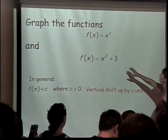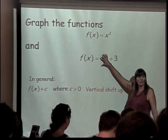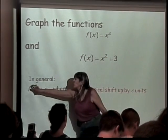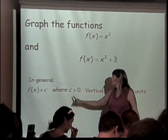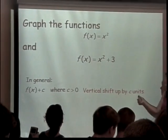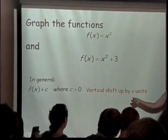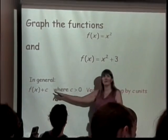Notice that this 3 is not part of what gets squared. So I think of this as being outside the function. If I have my function and then I add a number to it, if that number is bigger than 0, then I'm going to make a vertical shift upward by whatever number this is, c units.